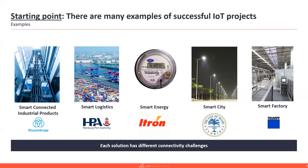Another great example is smart energy, particularly smart metering — one of the most mature use cases today. The number of connected meters is well beyond hundreds of millions of deployments, with connectivity options including cellular, LPWAN, mesh networks, and so on. These examples show how complex and how big the IoT connectivity landscape is today.